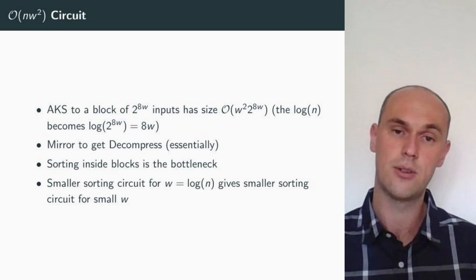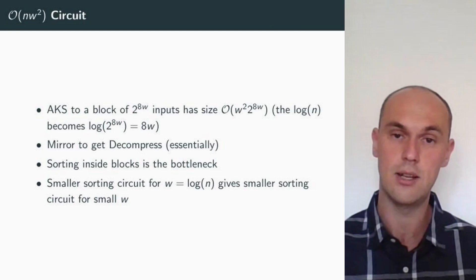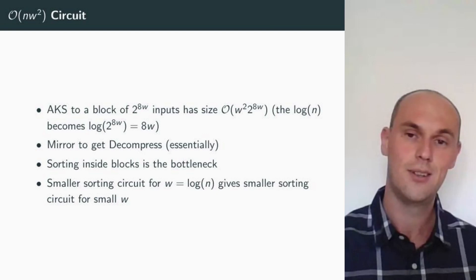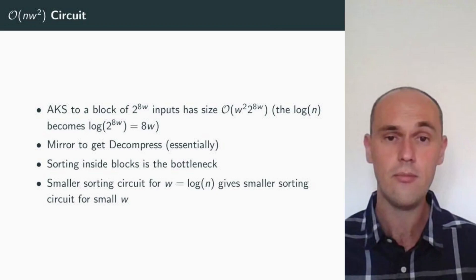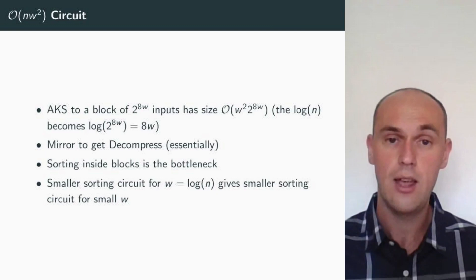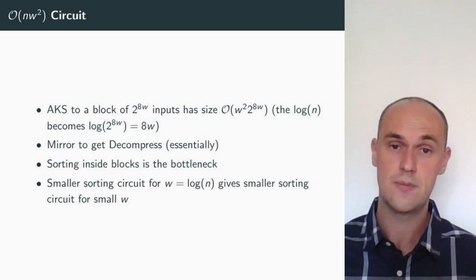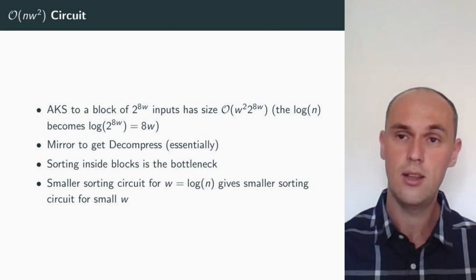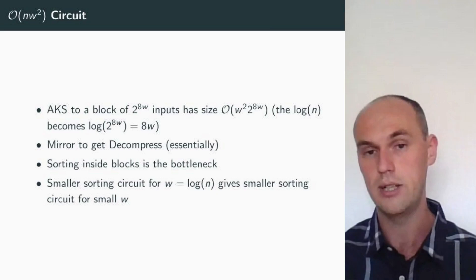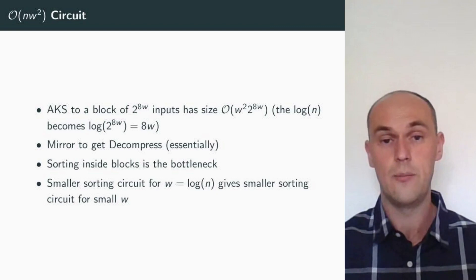Please note that, once again, the Ajtai-Komlós-Szemerédi sorting circuit, applied to a block of 2 to the 8w inputs, has size w times log of 2 to the 8w times 2 to the 8w, so that's w squared times 2 to the 8w. And to get our decompress circuit, we essentially mirror the counting circuit. I'm saying essentially because in the paper our construction is very similar, but a little bit different to save on the depth of our final circuit.